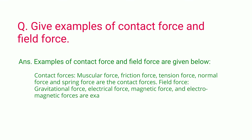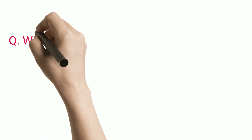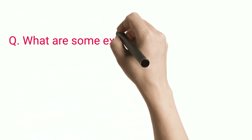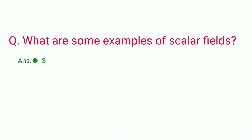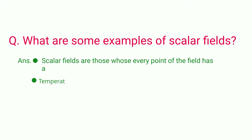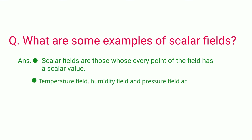Q: What are some examples of scalar fields? A: Scalar fields are those where every point of the field has a scalar value. Temperature field, humidity field, and pressure field are examples of scalar fields.